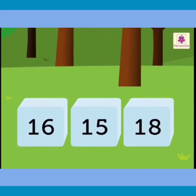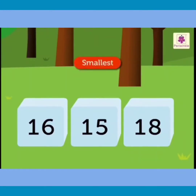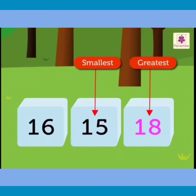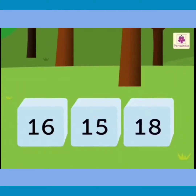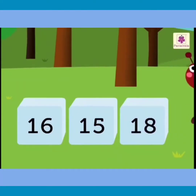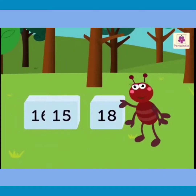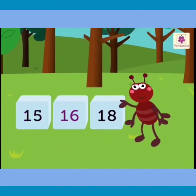Let's arrange 16, 15, and 18 in ascending order. Here, the smallest is 15 and the greatest is 18. Hence, the ascending order is 15, 16, 18.